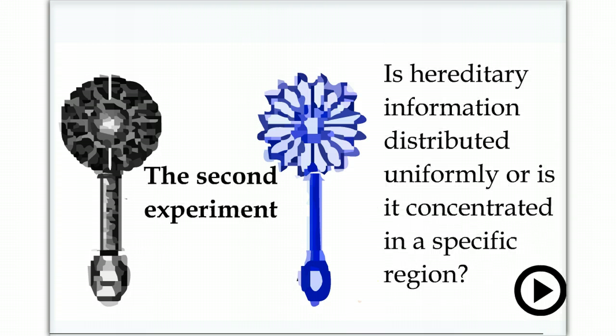So, an obvious question was, where is the information that controls head shape? Is it distributed everywhere or localized, say within the nucleus?